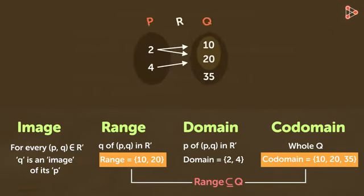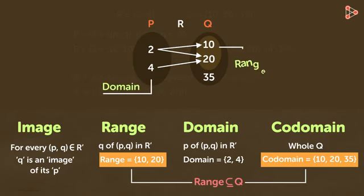Here is an arrow diagram to learn what is domain, range and co-domain. So this is the domain, this is the range and this is the co-domain for our relation R.